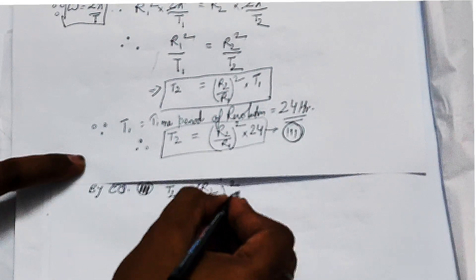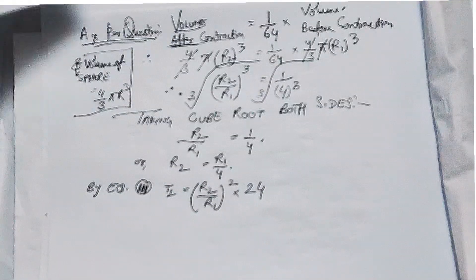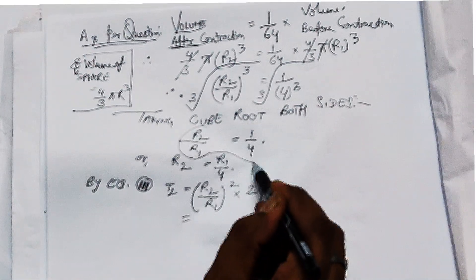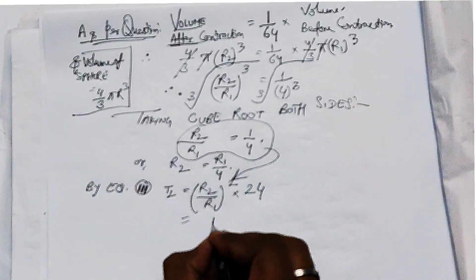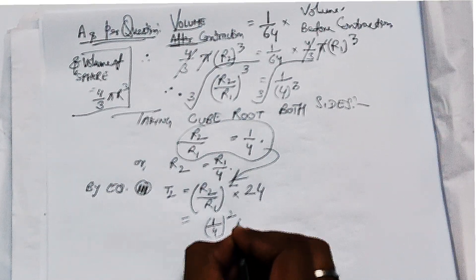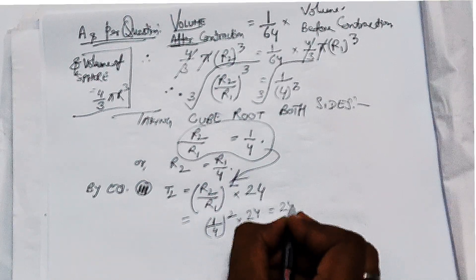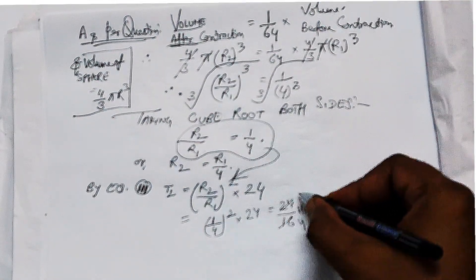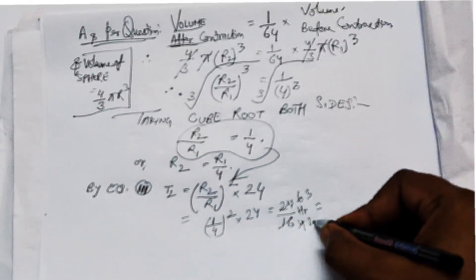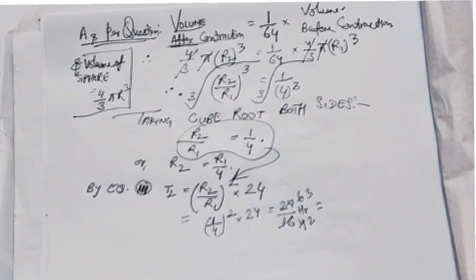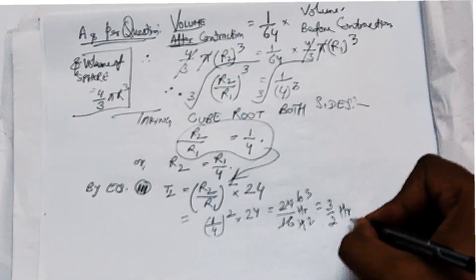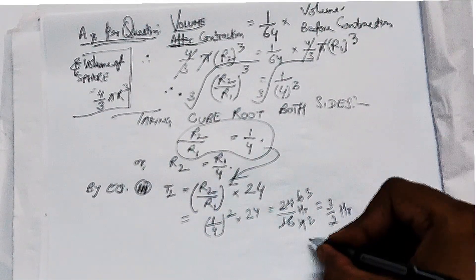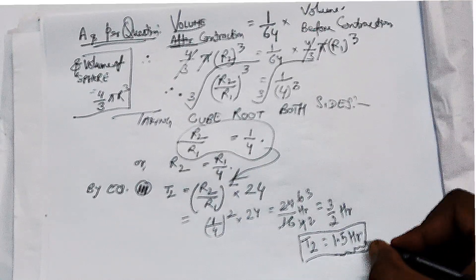We derived earlier that T2 = (R2/R1)² × T1. Now substituting R2/R1 = 1/4 and T1 = 24 hours, we get T2 = (1/4)² × 24 = 1/16 × 24 = 1.5 hours. So the duration of the day after contraction of the Earth is 1.5 hours, compared to 24 hours before contraction.